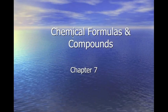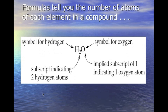We're going to go ahead and start Chapter 7 notes. In this chapter, we're going to be talking about naming and looking at chemical formulas and chemical compounds. The first thing we need to know is that the formula tells us the number of atoms and which elements are in the compound.